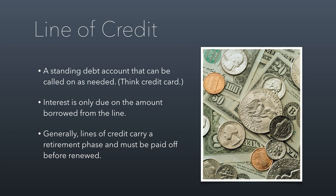Lines of credit are basically like credit cards for businesses — a standing debt account that can be called on as needed. You might have, for example, a $100,000 line of credit with a local bank. Just like a credit card, interest is only due on the amount actually borrowed. But unlike a credit card, a line of credit usually carries a retirement phase — typically about a year — meaning you have to repay the full amount owed, close it out, and then reboot it. With credit cards, lenders are happy for you to carry a balance indefinitely, but with lines of credit you have to retire the balance by paying it back.